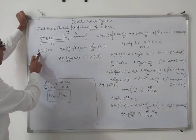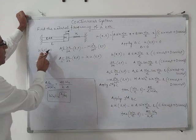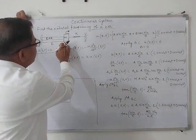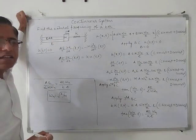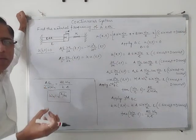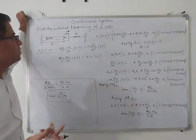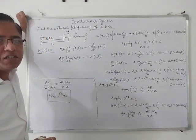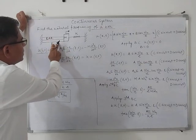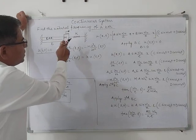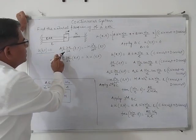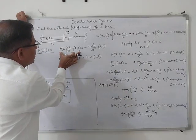At the fixed end, the displacement is zero, so u at x equal to zero and t is the boundary condition for the fixed end. At the free end, the bar is being pulled by two forces: one is the inertia force and the other is the spring force. Since the system is in equilibrium, the tensile force in the bar is equal to both the inertia force and the spring force.